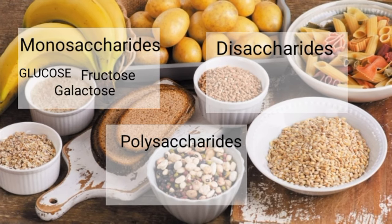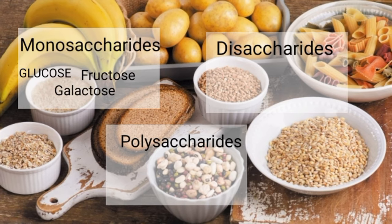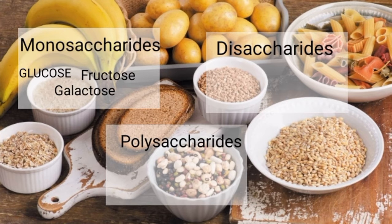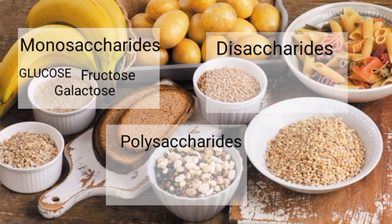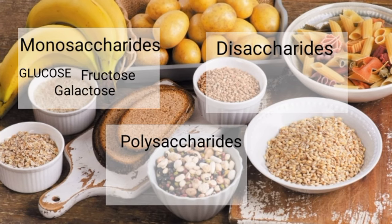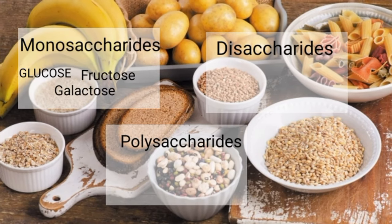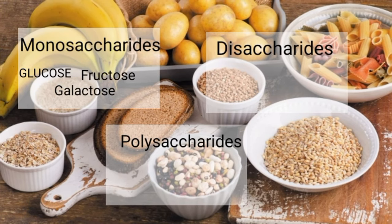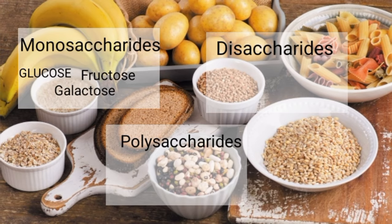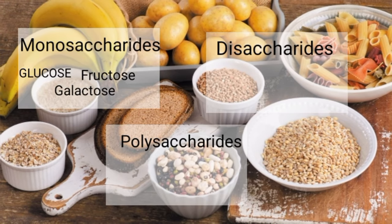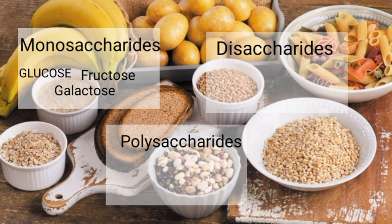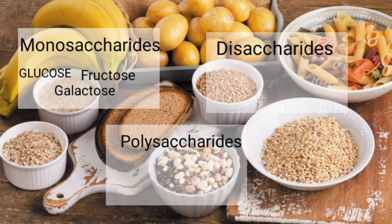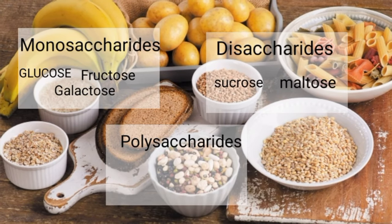Disaccharide molecules are formed when two simple sugar molecules, monosaccharides, combine through condensation to form a disaccharide. At the same time, disaccharides can also be broken down into their monosaccharide units through hydrolysis with the addition of one water molecule. Examples of disaccharides include sucrose, maltose, and lactose.